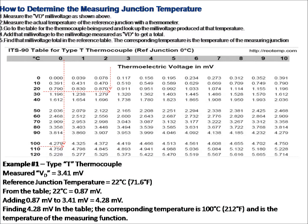To determine the measuring junction temperature: first, measure the millivolt at the thermocouple head — for example, 3.401 mV. Then measure the reference junction temperature — for example, 22°C — and find the corresponding millivolt from the chart, which is 0.87 mV. Add the two millivolt values: 3.401 + 0.87 = 4.28 mV. Now find the corresponding temperature from the chart, which is 100 degrees Celsius.